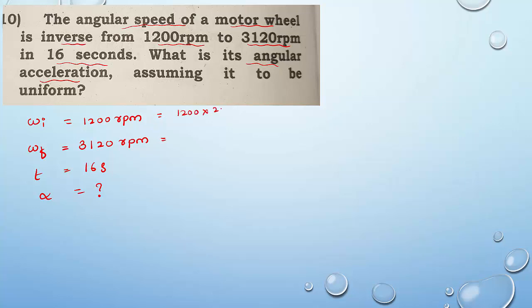So ωi = 1200 × 2π/60 = 40π radian per second, and ωf = 3120 × 2π/60 = 104π radian per second. Now we go for alpha.